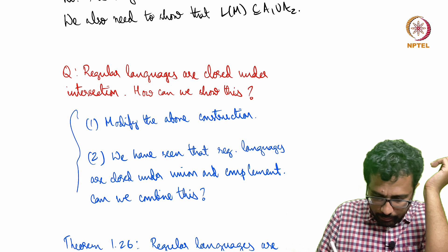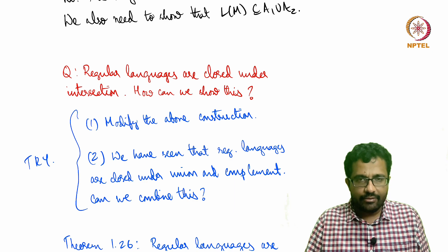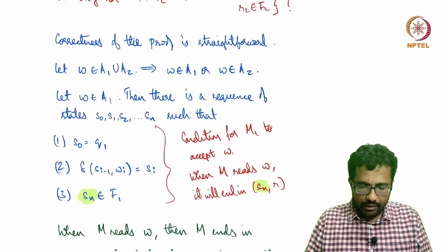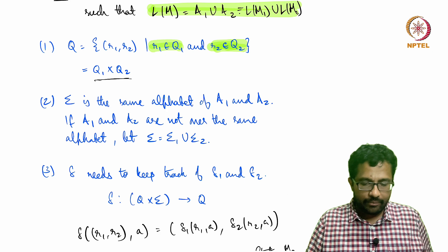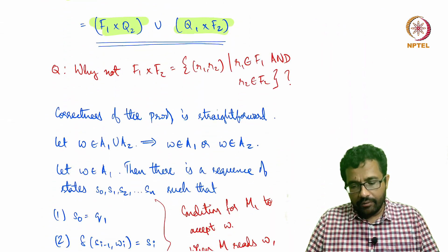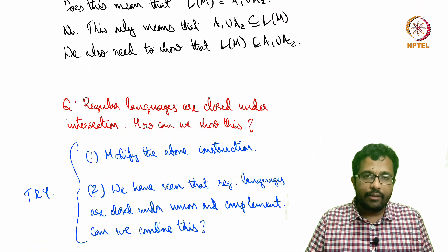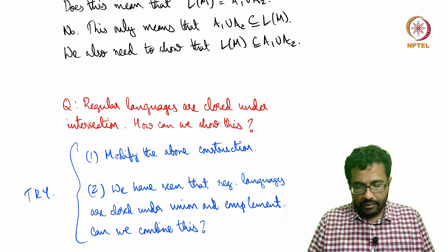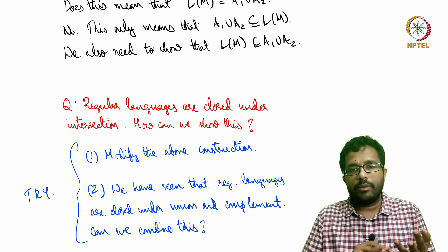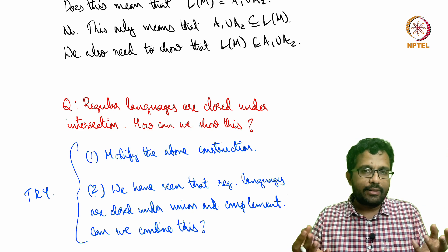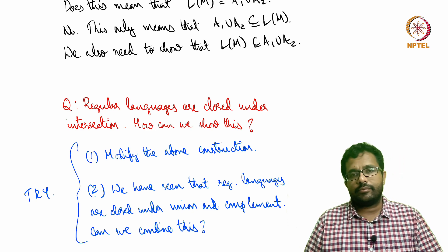I want you to just think about both of these. Neither of these are that difficult—it's fairly straightforward. First, we constructed a DFA M that accepts the union language. Can we modify this construction to make a DFA that accepts the intersection? Second, we've already seen regular languages are closed under union and complement. Can we somehow combine these two inferences to get that regular languages are closed under intersection?